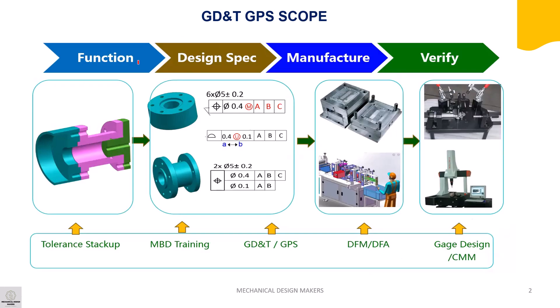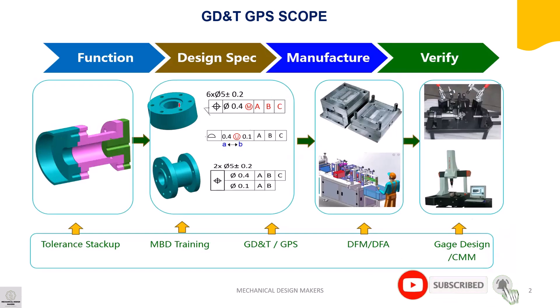From function to design specification, to manufacturing, and also verification — GD&T and GPS are closely related to all of them. Let's look at one of the drawings. There is a component here where you may put some geometrical tolerance, size tolerance, position tolerance, or profile tolerance.